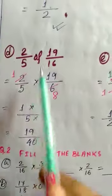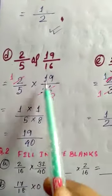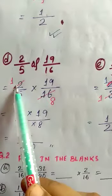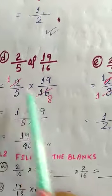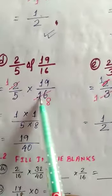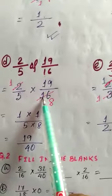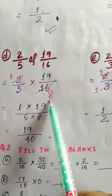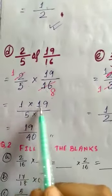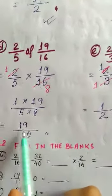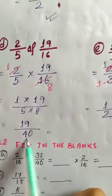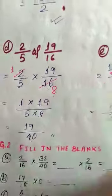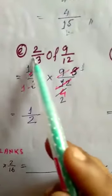Question 1d: 2/5 of 19/16. 'Of' means multiplication, so 2/5 × 19/16. Since 2 is a factor of both 2 and 16, we cancel: 2 goes into 2 once and 2 goes into 16 eight times. So we get 1×19 over 5×8 = 19/40. The answer is 19/40.